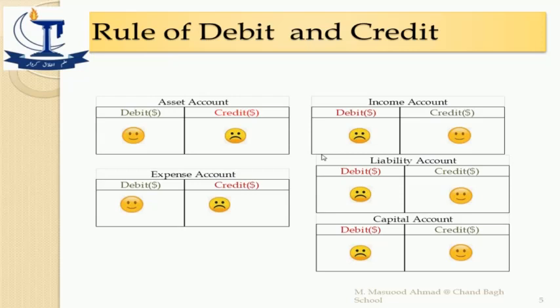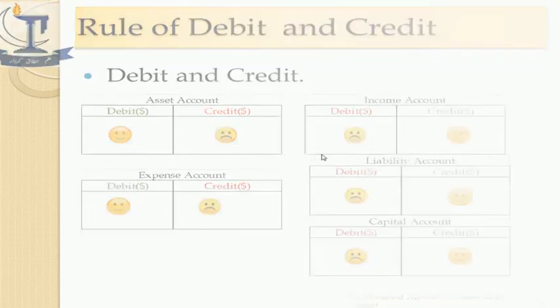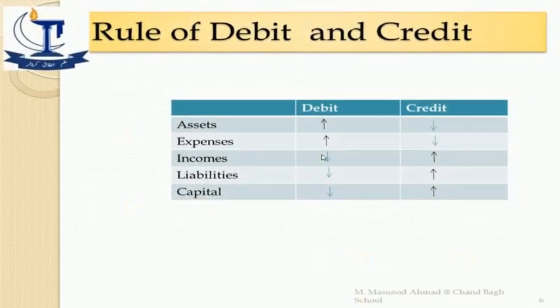The exactly opposite rule applies to income, liability, and capital — they belong to the same family. Whenever they increase, place the amount on the credit side of the ledger. When they decrease, place the amount on the debit side of the ledger. For example, income increases — place the amount on the credit side; income decreases — place the amount on the debit side. The same goes for liabilities and capital.